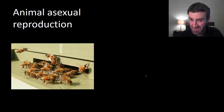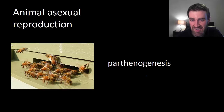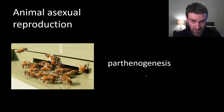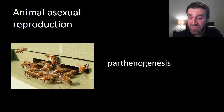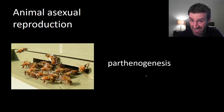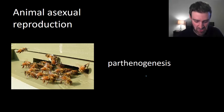Honeybees are an interesting example of a type of asexual reproduction called parthenogenesis. Parthenogenesis is the idea that sometimes females can lay eggs that actually grow into new offspring without being fertilized. In honeybees, the unfertilized eggs become male drones, while fertilized eggs lead to new female honeybees. It's an interesting example because the eggs are still produced by meiosis, which does generate some genetic variety, but we consider it asexual because sperm is not combining with the egg as in sexual reproduction.